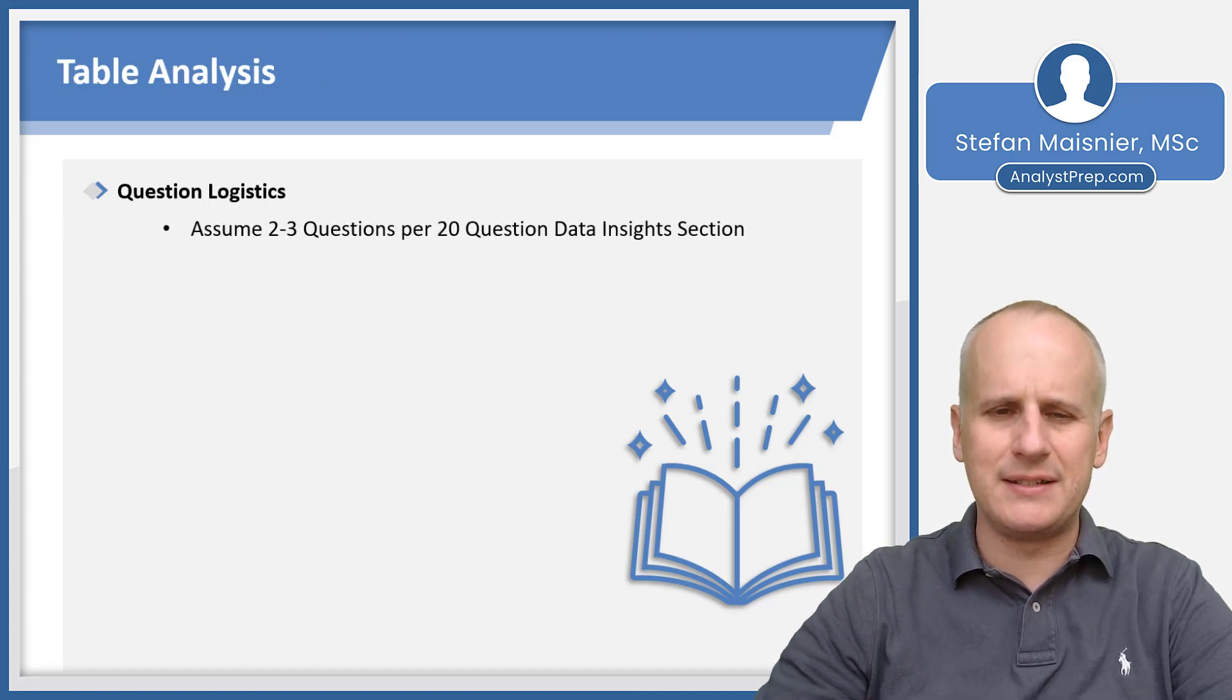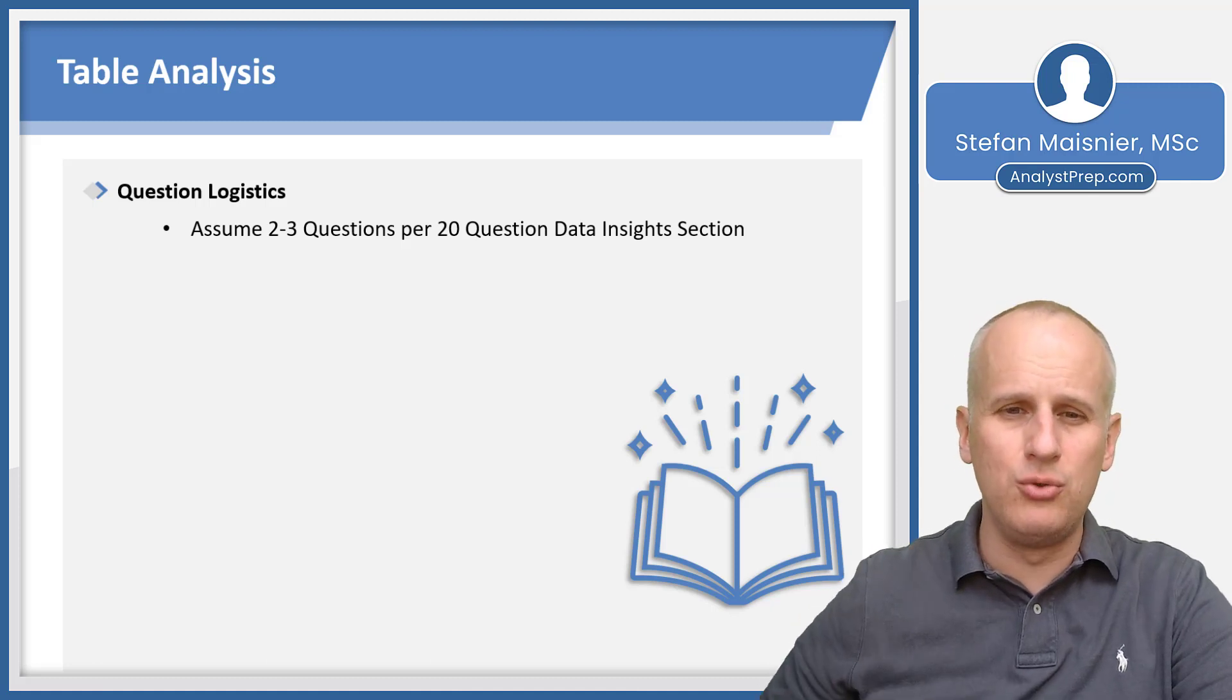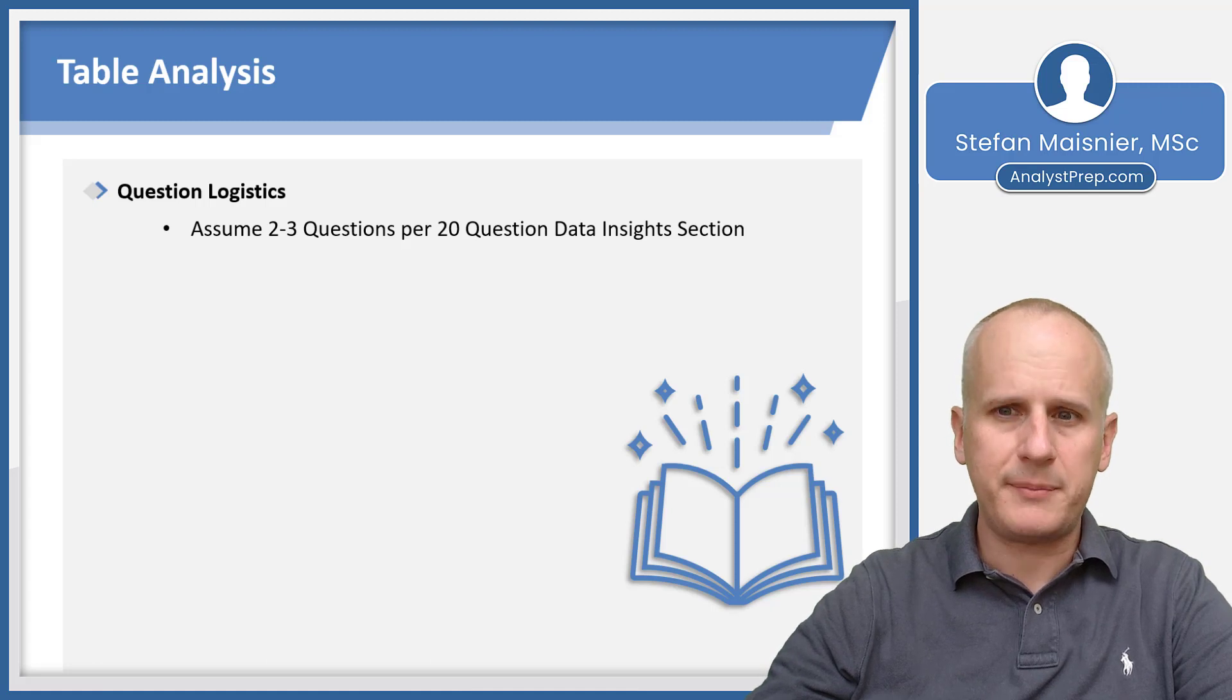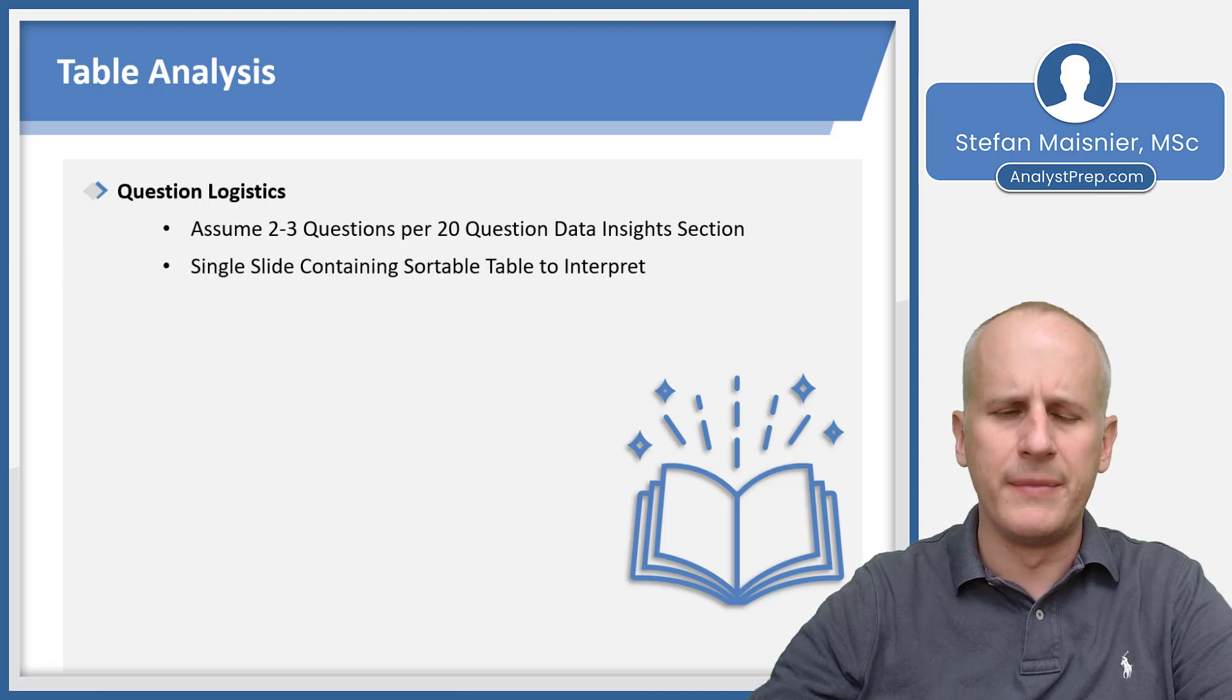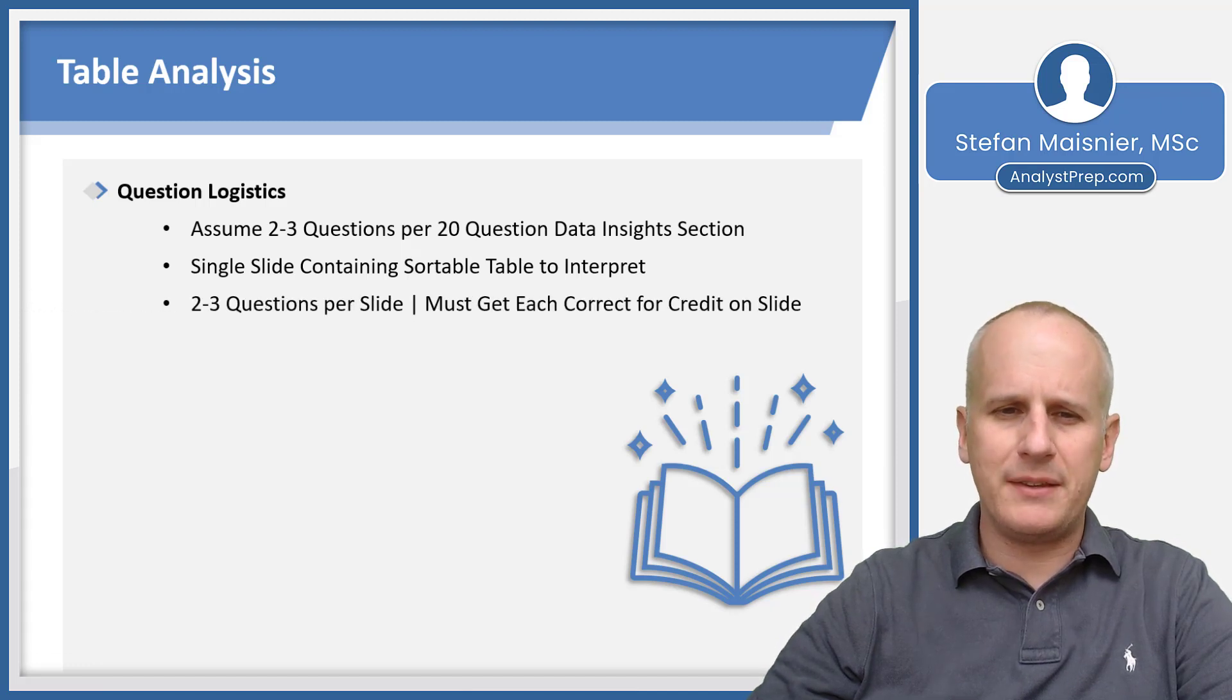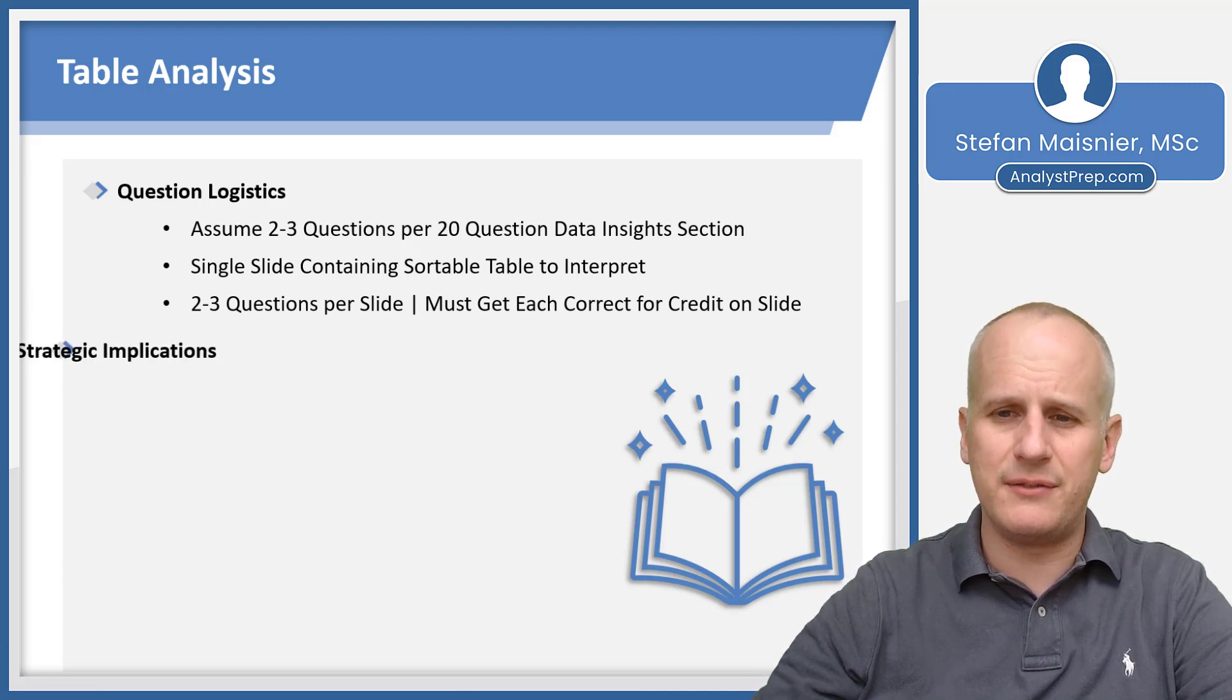Then we get to our table analysis. You're going to assume two to three questions of table analysis per 20 question data insight set. It's very likely that it's going to be two. It could even be one, but usually it's going to be two. It could be three. So the table analysis is actually one of the places that the exam can be really adaptive from the perspective of the data insights section because the adaptivity, it now groups table analysis and graphics interpretation in kind of a one-size-fits-all category. Then you're going to have one slide with that table to interpret and that table is sorted. You'll have two to three questions per table analysis slide. And as always, you must get each correct for credit on the slide.